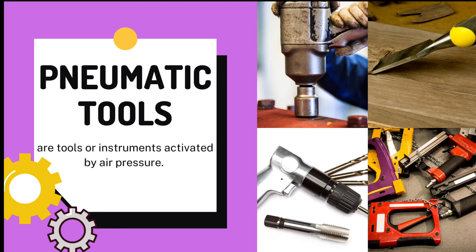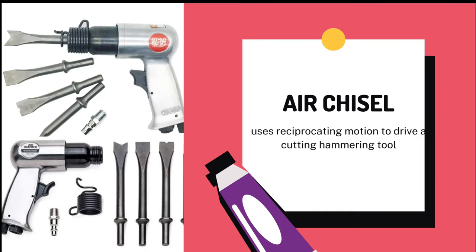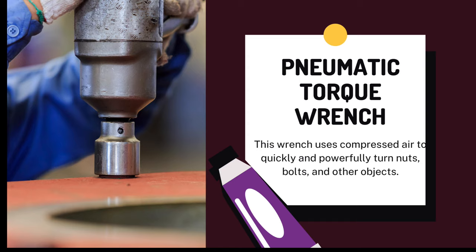The last classification of tools are pneumatic tools. These tools or instruments are activated by air pressure. The first example is the air drill, which is lighter than a comparable electric drill. Repeatedly stalling or overloading does not damage or overheat the air drill. Next is the air chisel, which uses reciprocating motion to drive a cutting or hammering tool. Last is the pneumatic torque wrench, which uses compressed air to quickly and powerfully turn knots, bolts, and other objects.